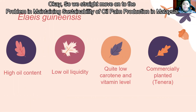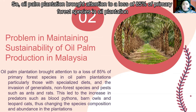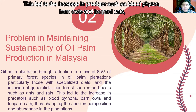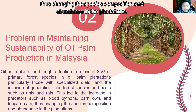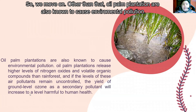Moving on to the problems in maintaining sustainability of oil palm production: oil palm plantations have been linked to a loss of 85 percent of primary forest species, particularly those with specialized diets, and the invasion of generalist non-forest species and pests such as rats. This leads to an increase in predators such as blood python, barn owl, and leopard cats, changing species composition and abundance in the plantation.